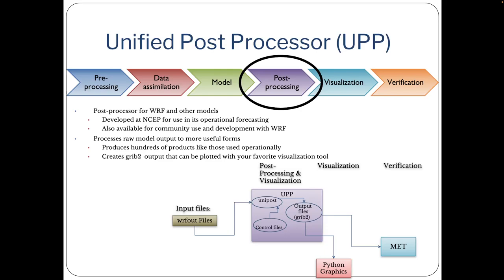The next step in the workflow is post-processing. The Unified Post-Processor is used to convert the model output into useful forecast products. It can compute hundreds of fields and diagnostics and interpolate to different vertical coordinates like pressure levels. The output is in GRIB2 format and can be viewed with a third-party visualization tool.